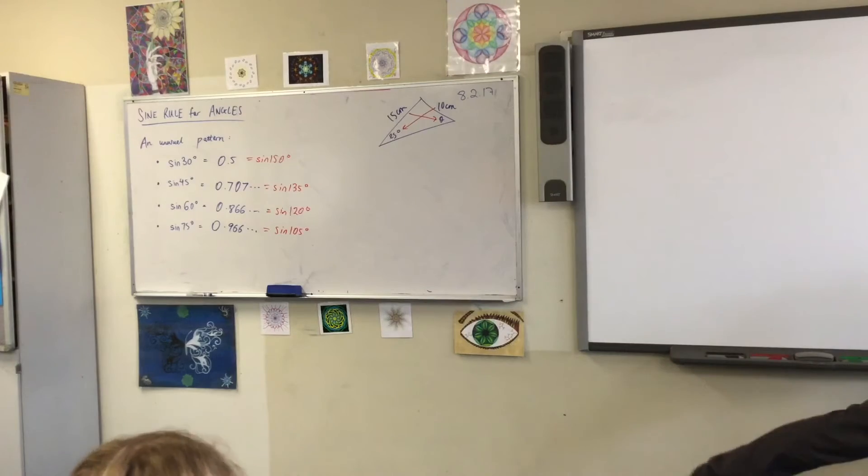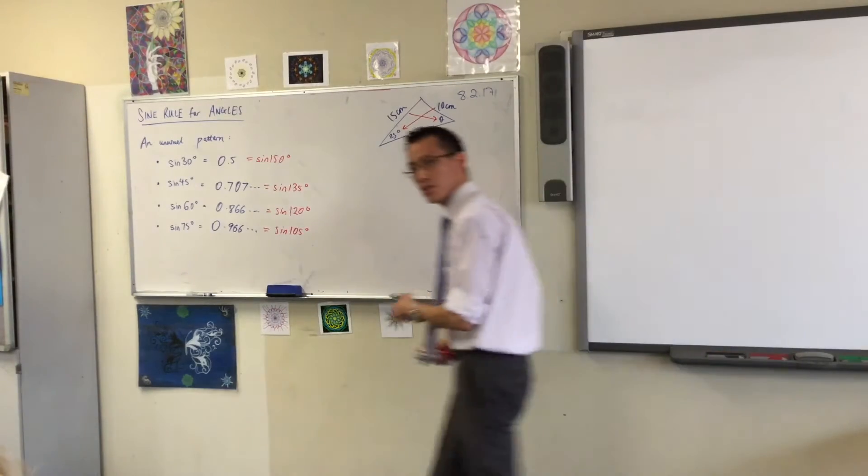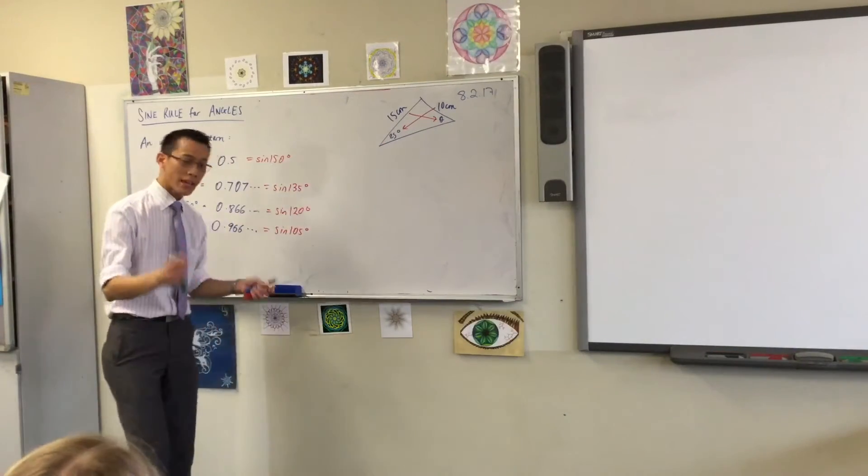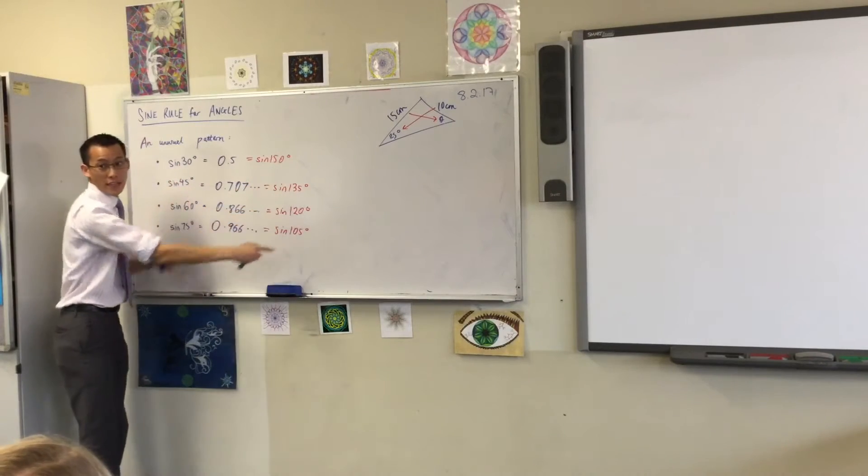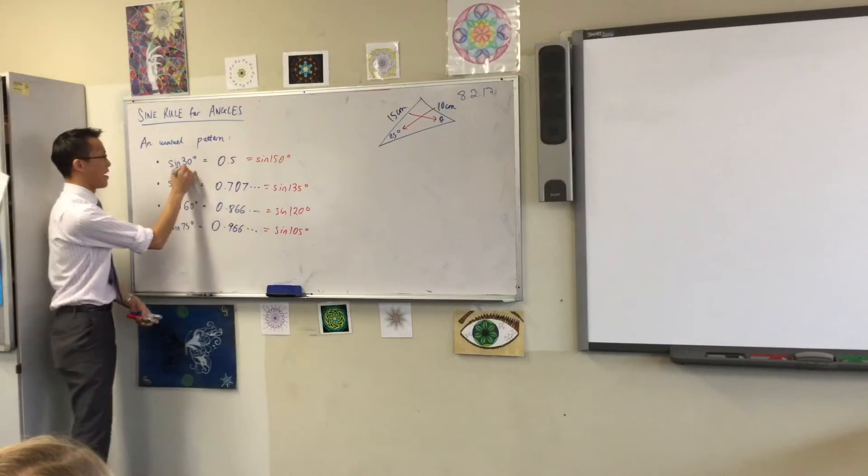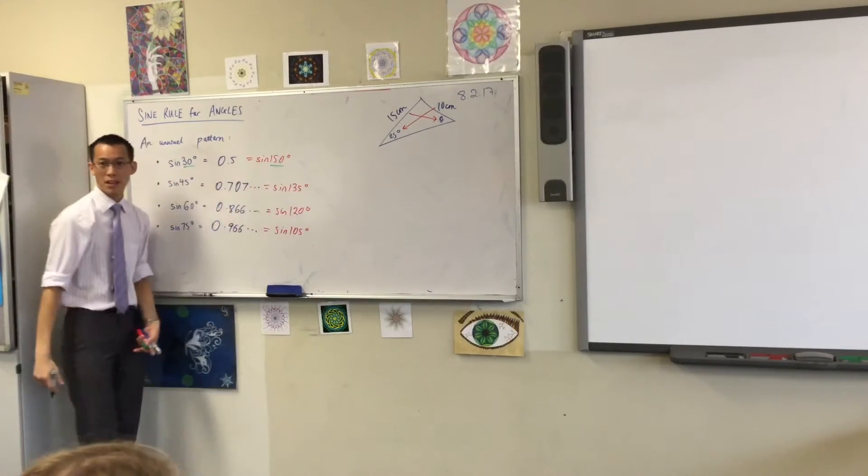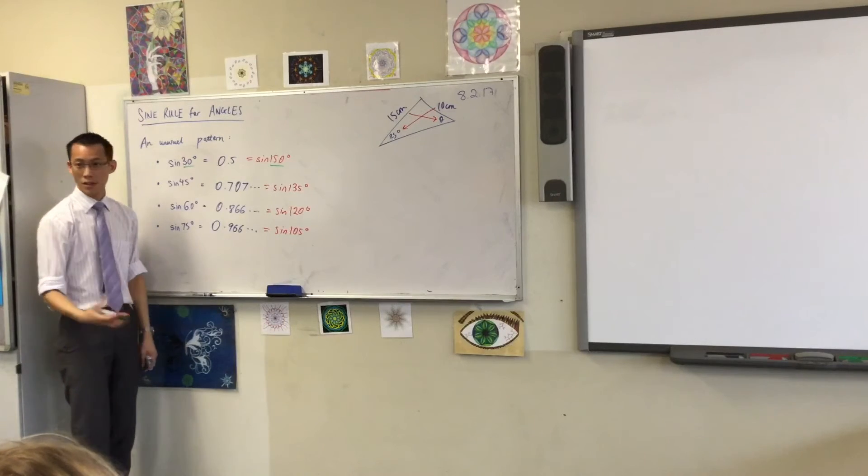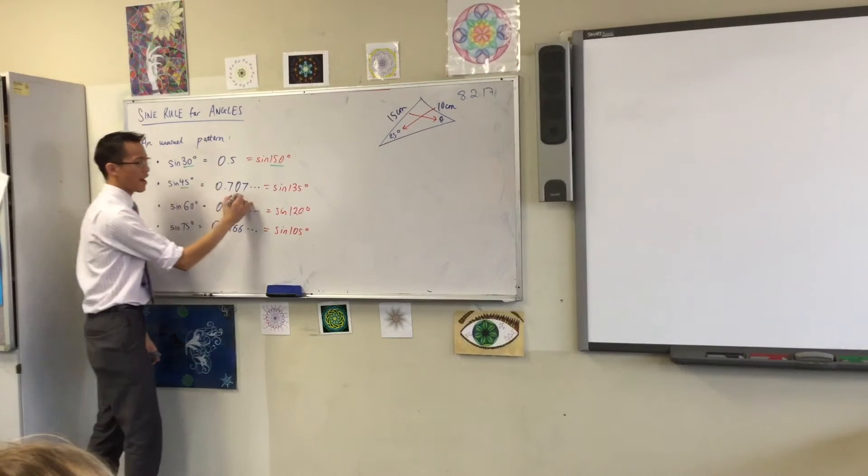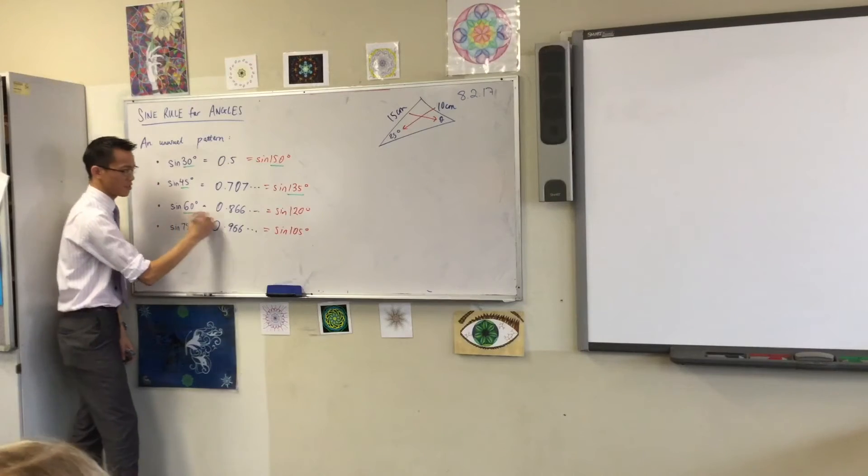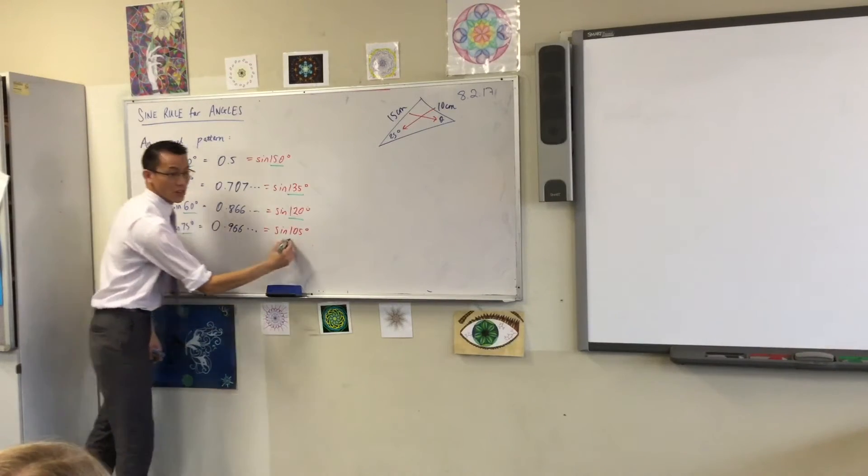What's the relationship between the angles that I've got here? They add up to 180. Yeah, each of these pairs that I've got here—this one and this one, 30 plus 150, they'll give you 180. 45 plus 135, and so on.